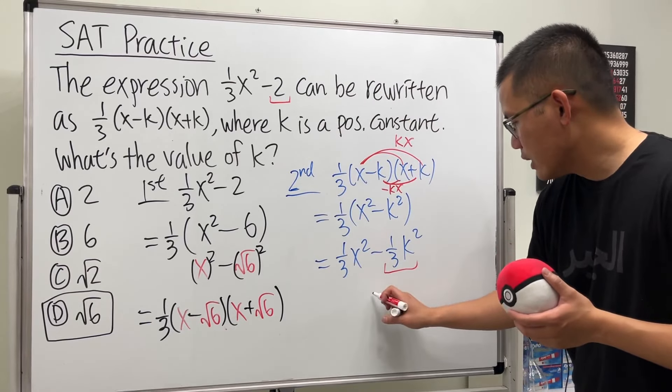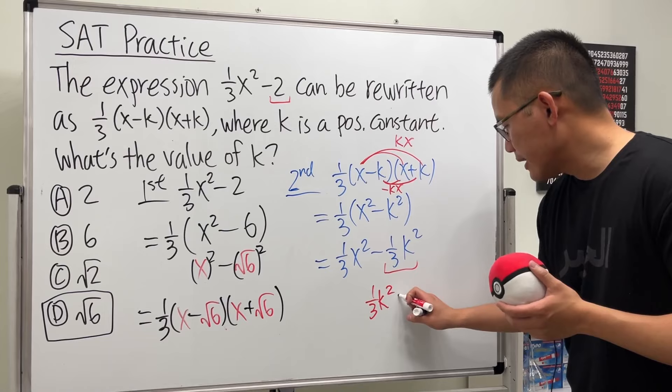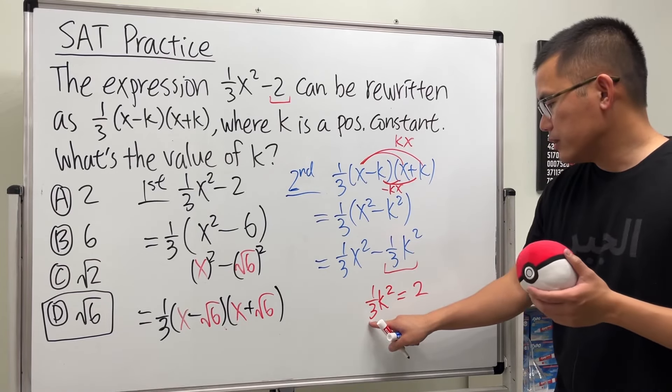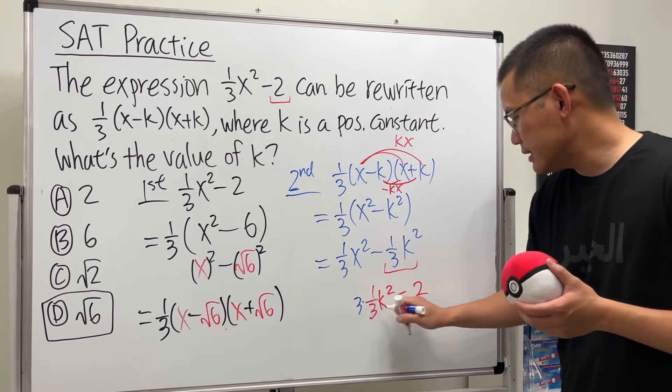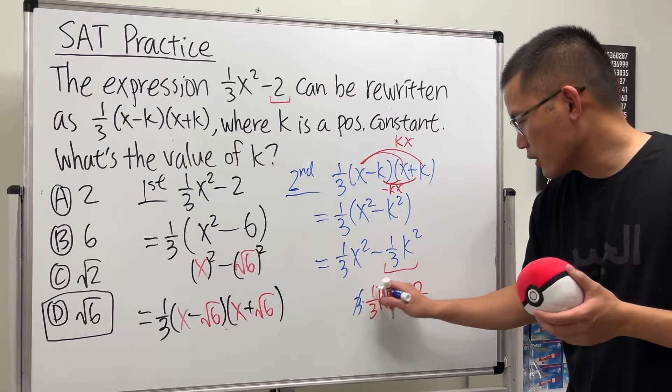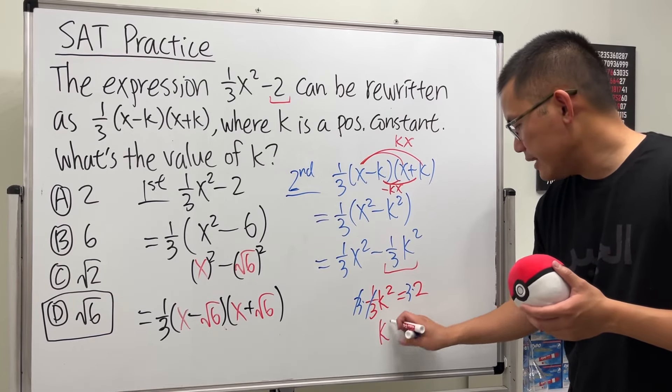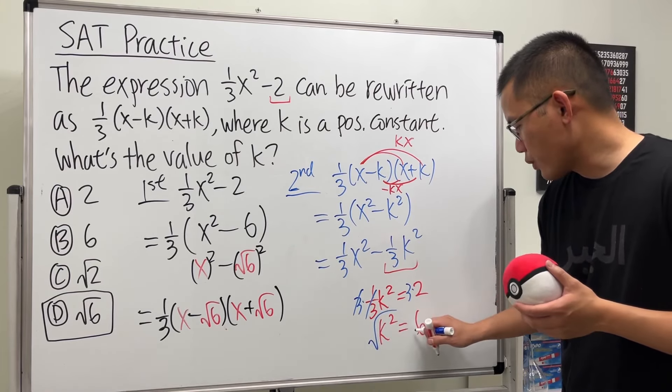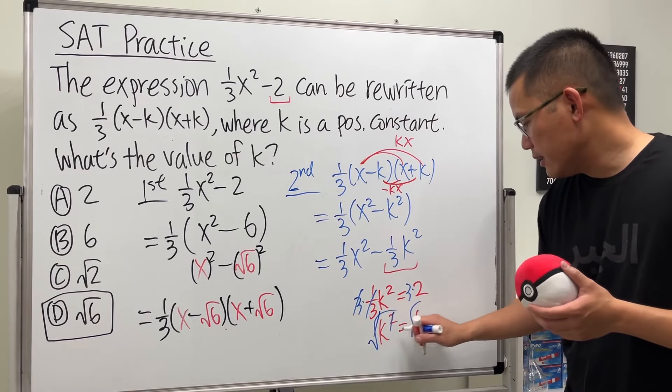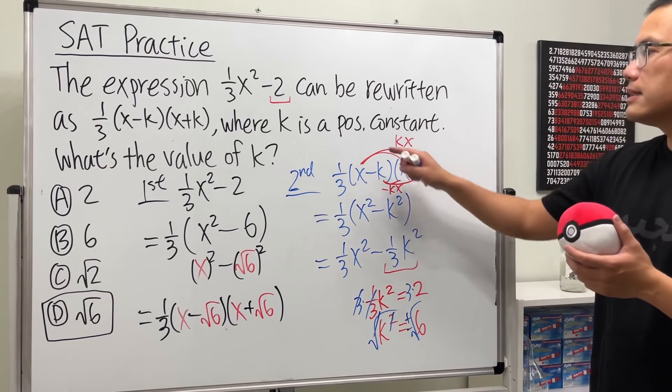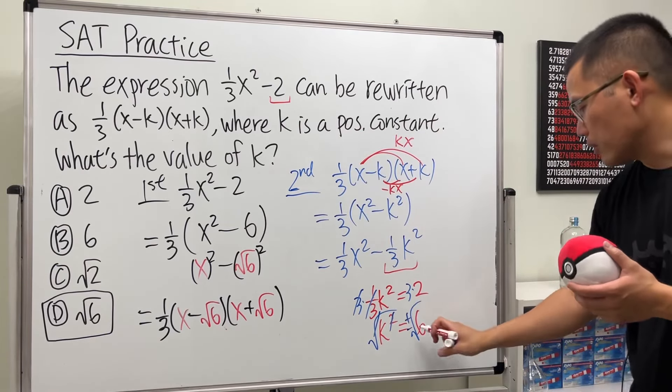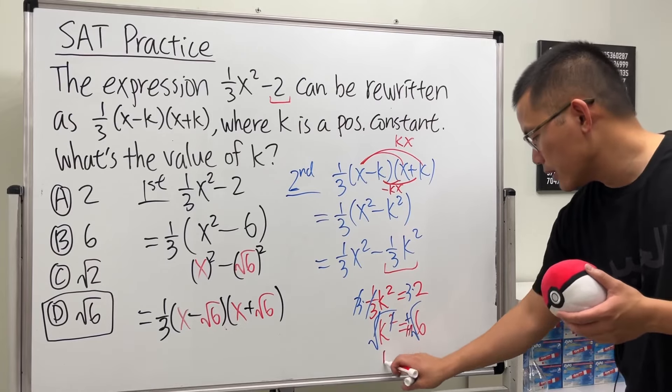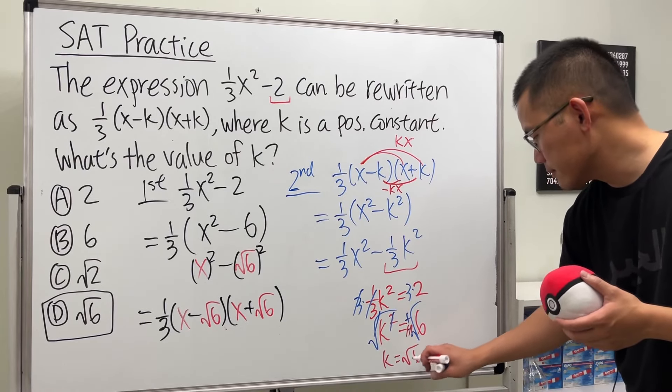So we know that 1/3 k² has to be equal to 2. And then we can just multiply the 3 on both sides so that they cancel, and then we get k² equals 6. And then in the end, we can just take the square root on both sides. And technically, we should have a plus or minus, but it says k is a positive constant. So it's just square root of 6, positive.